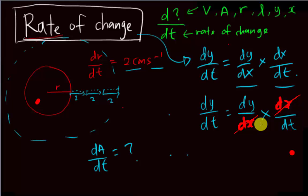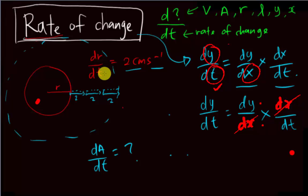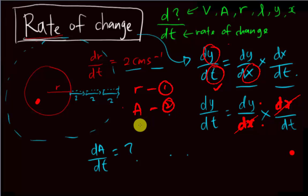For the chain rule, there are only three variables. You have y, you have t, and you have x — to be more accurate, three variables. For rate of change, you must always have time (t), and y and x can be anything: volume, radius, area, length — anything. But you can only have three variables.